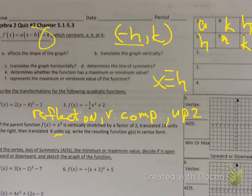The plus 2 means you go up 2. A negative means you have a reflection — when you have a negative in the very front, you have a reflection. And then it's just normal; you don't say anything else.